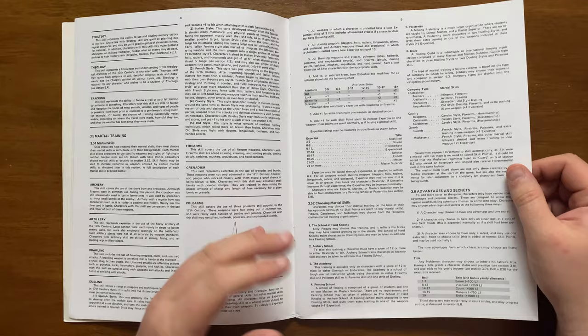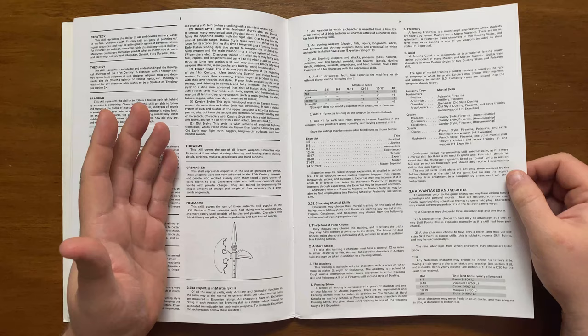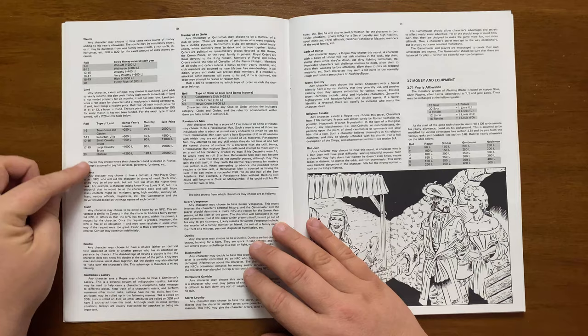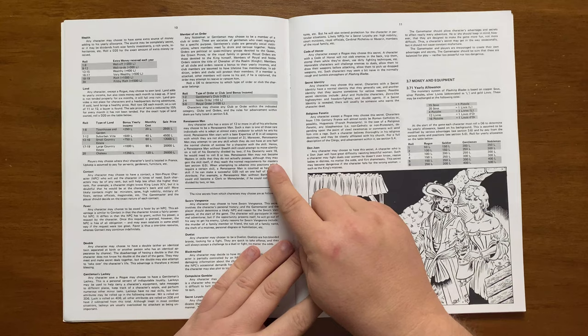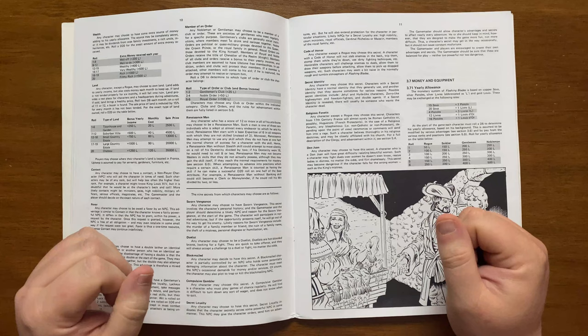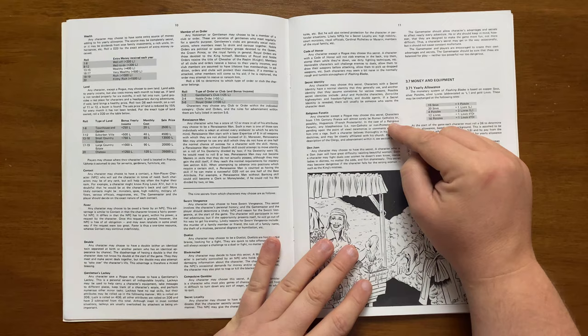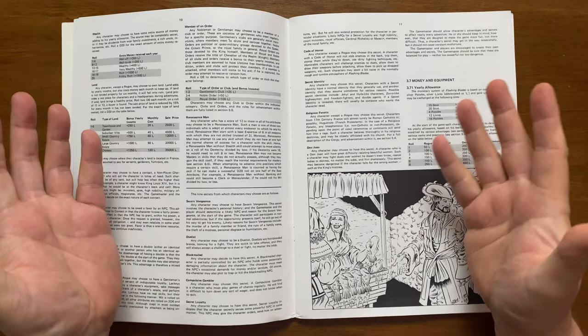Another aspect of character building is advantage and secrets. A character can choose to have one advantage and one secret. They can choose to only have an advantage by spending 2 skill points, and having only a secret gives them one extra skill point. The advantages range from titles, wealth, land, a special contact or a special favour owed to them, a double, a gentleman's lackey, being a member of an order or even a renaissance man. The secrets are sworn vengeance, i.e. where an NPC has sworn vengeance against the character, duellist, someone who was always looking for a fight, blackmailed, compulsive gambler, secret loyalty, code of honour, secret identity, religious fanatic and even Don Juan, someone who is irresistible to the opposite sex, which inevitably brings trouble.